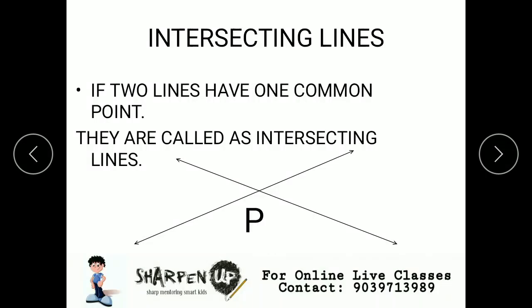Intersecting lines: if two lines have one common point, they are called as intersecting lines. These lines meet at a single point.